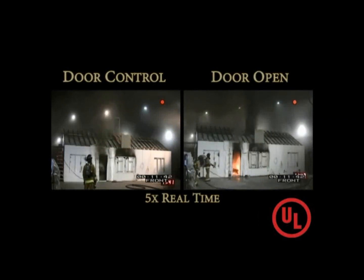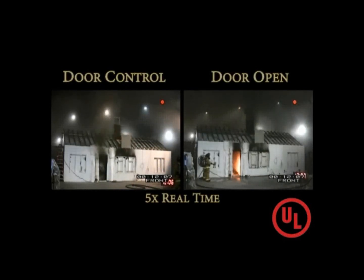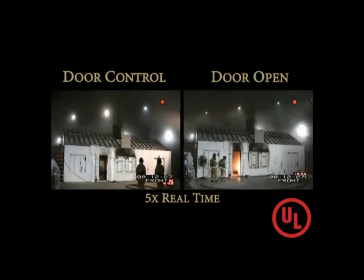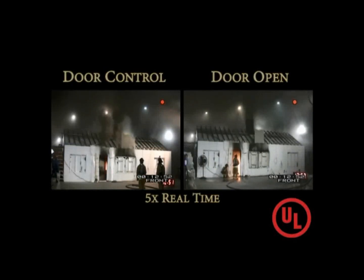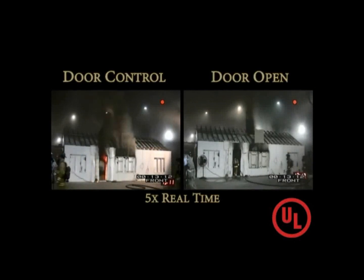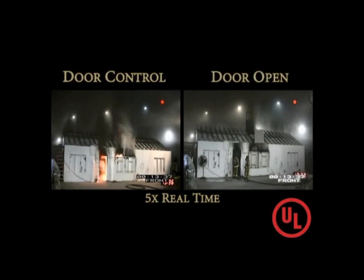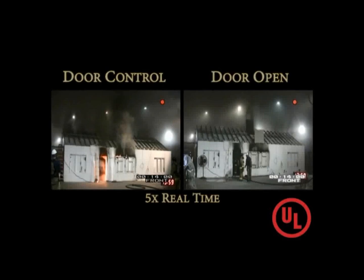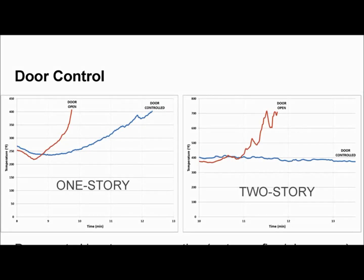We combined this with a vertical ventilation test. We triggered vertical ventilation as soon as we hit 400 degrees Fahrenheit at three feet — where it would be extremely hot at head level. From door wide open to door controlled, there was about a three-minute lag in reaching 400 degrees at three feet. That's an extra three minutes to get water on that fire.